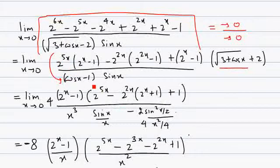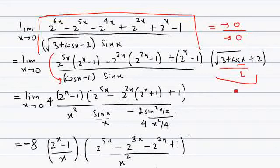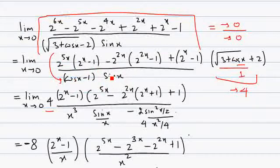After rationalization, as x approaches 0 this part approaches 1, so the whole rationalized denominator part approaches 4, which we can write outside. We note that the trigonometric function and the exponential part are independent of each other, so we can work out their limits separately.